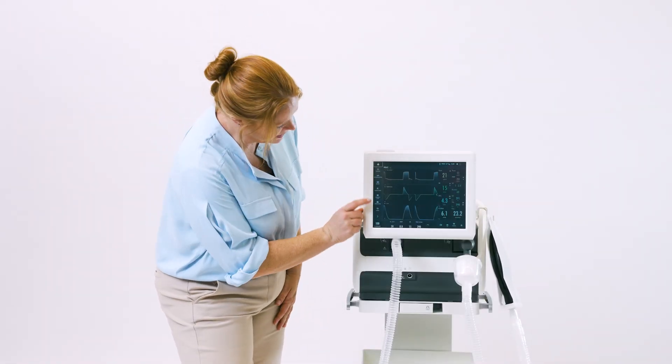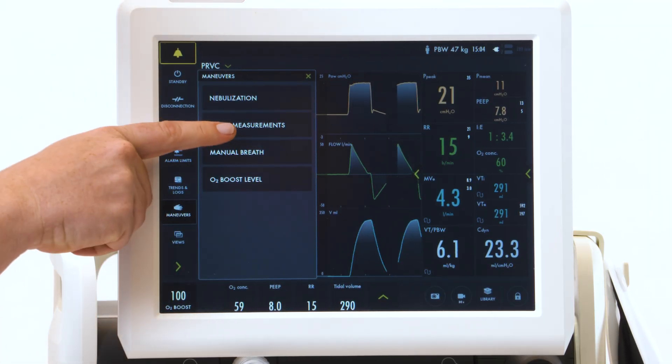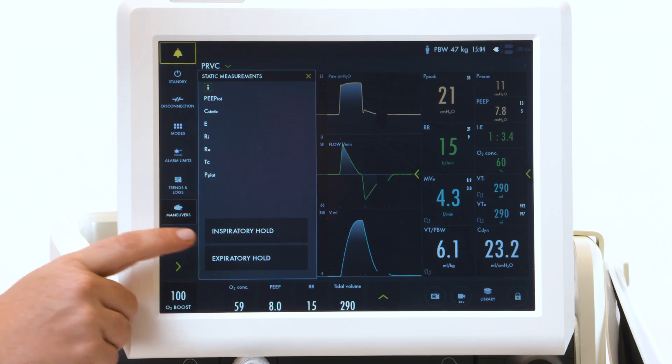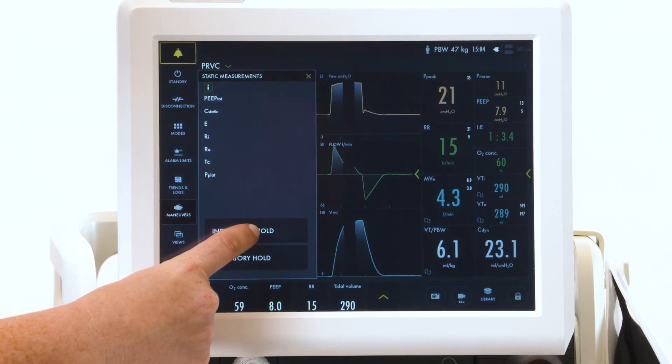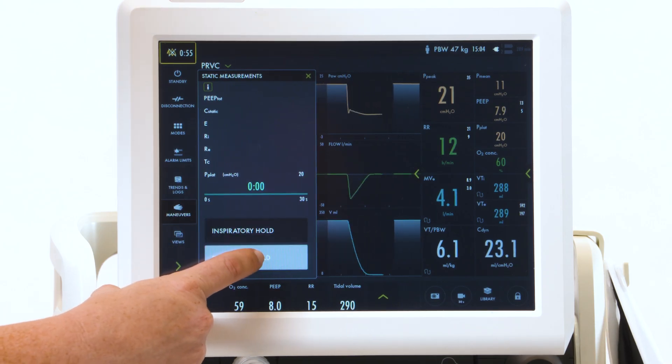Your inspiratory and expiratory hold are located underneath your maneuvers tab. Touch your maneuvers and select static measurements. This is where you can get measured values based on these holds. To activate an inspiratory hold, touch and hold until it beeps and says active for a second or two.